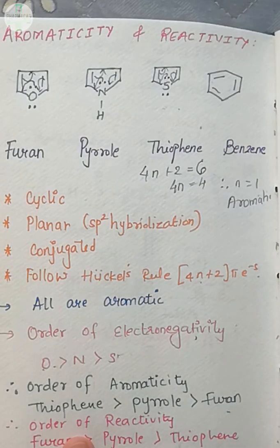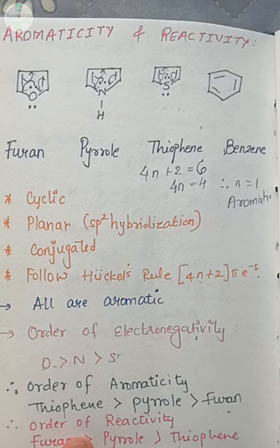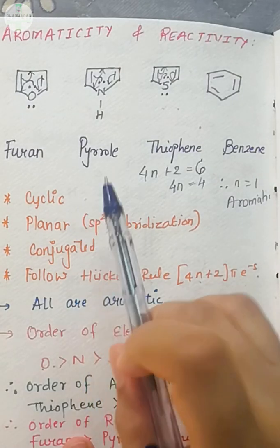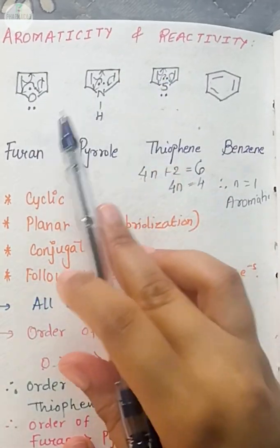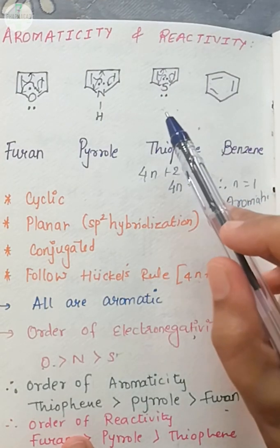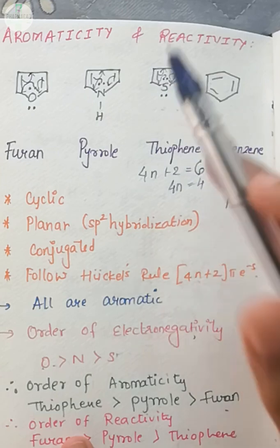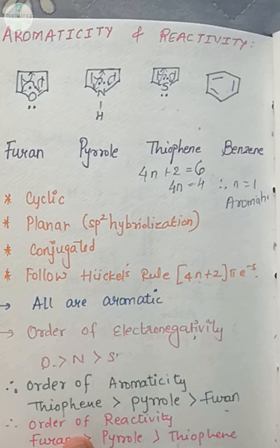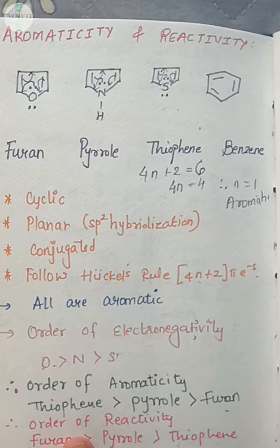Now we also know that molecules or compounds that are aromatic are very stable, right? So out of these three, who is the most aromatic? Thiophene is the most aromatic, meaning thiophene is the most stable. And chemistry has another concept: the molecule or compound that is most stable is generally not reactive. Their reactivity is quite low.